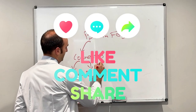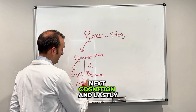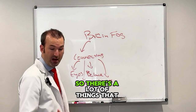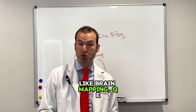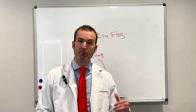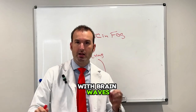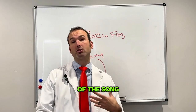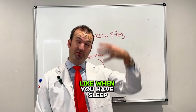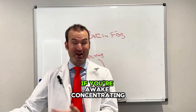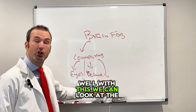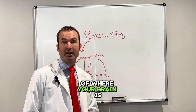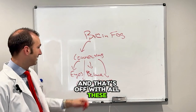Next: balance. Next: cognition. And lastly: brain waves. There are a lot of things that you may have heard of, like brain mapping or QEEGs. Your brain is ultimately like an orchestra — you've got all these different sections with brain waves and you want the right amount of each brain wave. You don't want too much or too little. Like when you have sleep, you want more certain brain waves than when you're awake concentrating. With this, we can look at the brain waves and say what's happening when you're sitting there at rest — that's the best representation of where your brain is throughout the day.